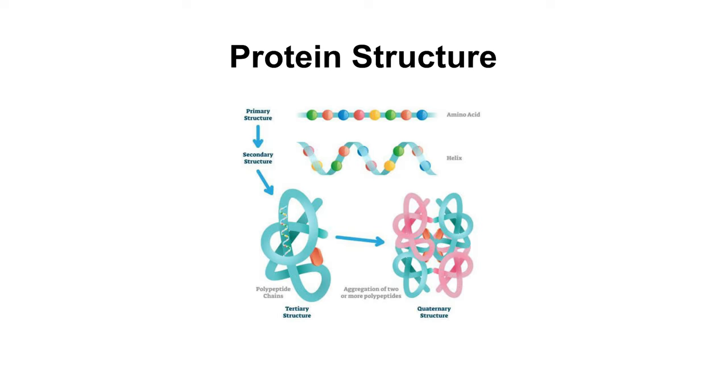Now that we are done with the functions and types of proteins, it is time to discuss the structural characteristics of proteins. The structure and shape of proteins can be studied at four different levels: primary, secondary, tertiary, and quaternary, each level being more complex than the previous one.